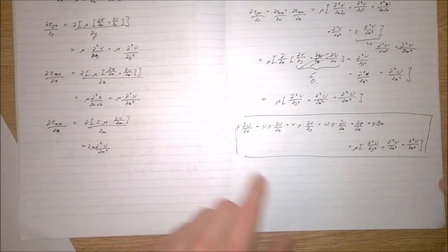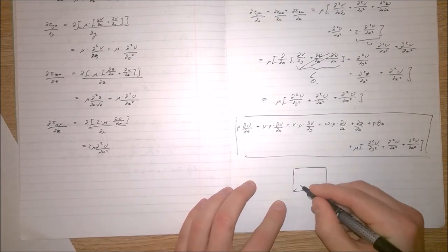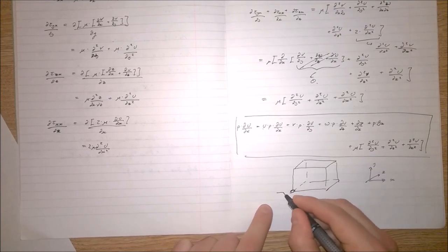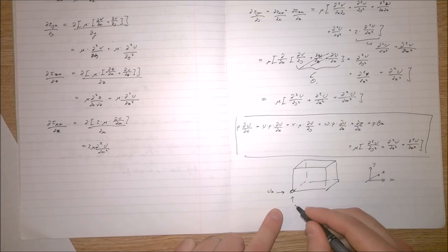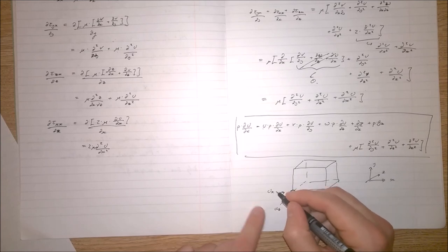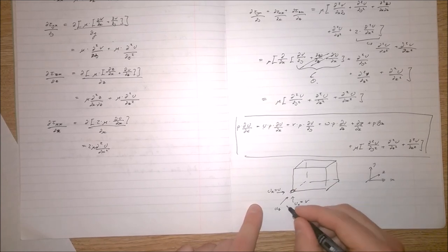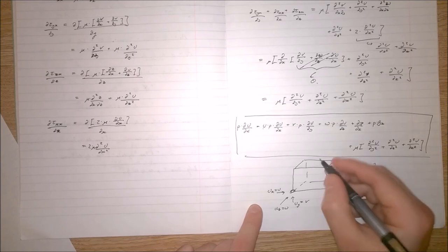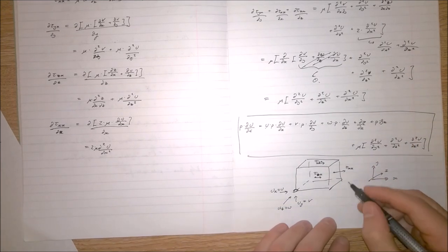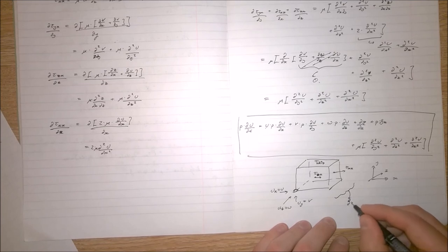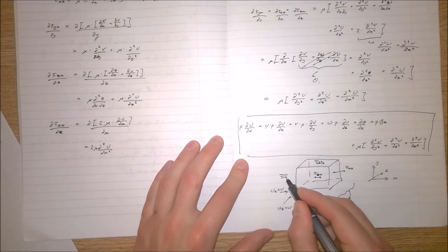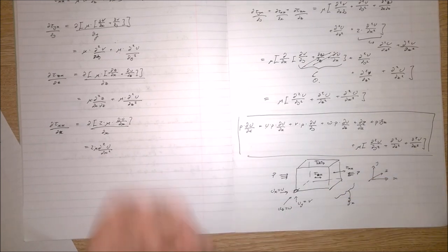This is a very common form of the Navier-Stokes equation, and it's all come from this idea: at any point in the fluid, we have a velocity going in the x-direction (u), a velocity in the y-direction (v), and a velocity in the z-direction (ω), plus forces on each face. The entire thing could be subject to gravity or electromagnetic force, and we've also got this hydrostatic pressure as a result of it simply being a fluid.